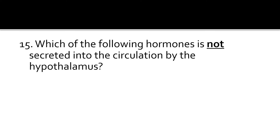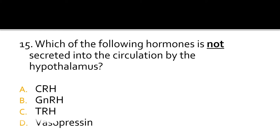Question 15. Which of the following hormones is not secreted into the circulation by the hypothalamus? The options are CRH, GnRH, TRH, or vasopressin. The correct answer is D, vasopressin, which is also known as ADH. It is secreted by the posterior pituitary.